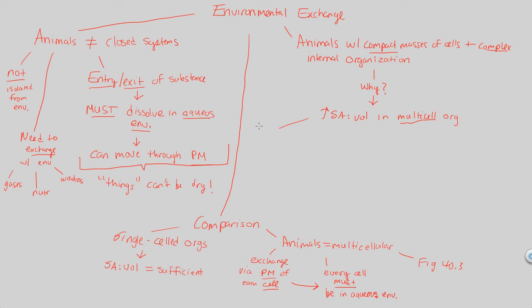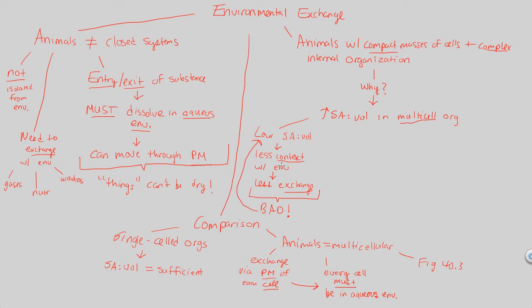An animal with a low surface area to volume ratio would have less contact with the environment, which automatically means less exchange. Less exchange is very bad — a low surface area to volume ratio leads to less contact, less exchange, less entry and exit, and thus you won't be a successful cell, tissue, organ, system, or organism. This is the golden rule of surface area to volume ratio.